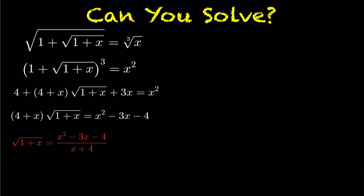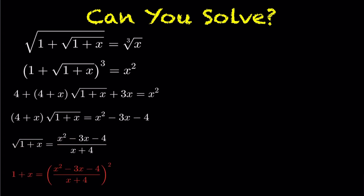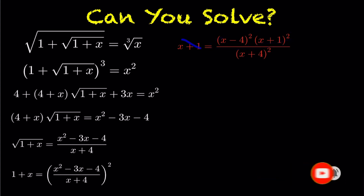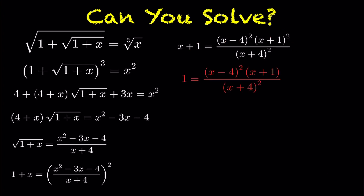So we divide out the (x+4), giving us the root of (1+x) isolated. We can then go ahead and square both sides. After squaring both sides, we factor the numerator, and we end up getting some cancellation between the two expressions.